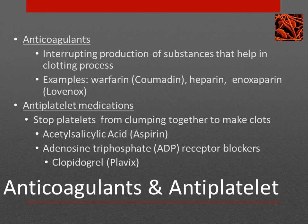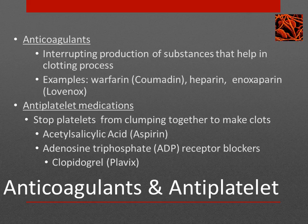Anticoagulants prevent clot formation by interrupting production of cofactors that help in the clotting cascade. Medications that do this include warfarin (Coumadin), heparin, and enoxaparin (Lovenox). Heparin and Lovenox are given subcutaneously in patients at risk for DVTs, while Coumadin is taken orally. Patients at risk for DVTs include those on bed rest, with pelvic fractures, obesity, recent surgery, or a family history of blood clots. A DVT presents with pain, swelling, and redness in the leg.